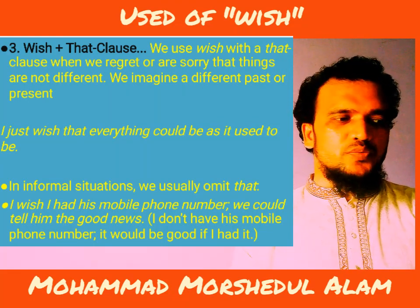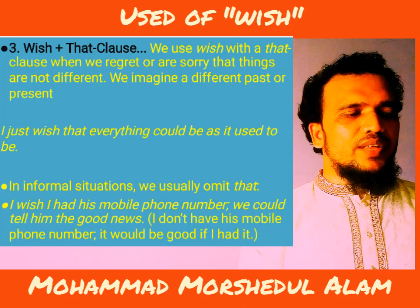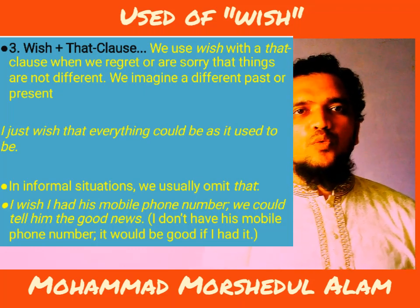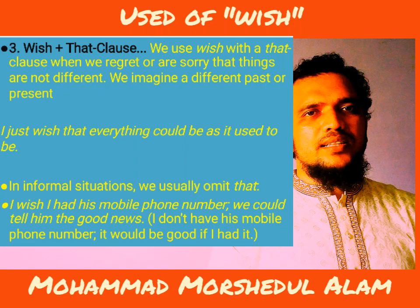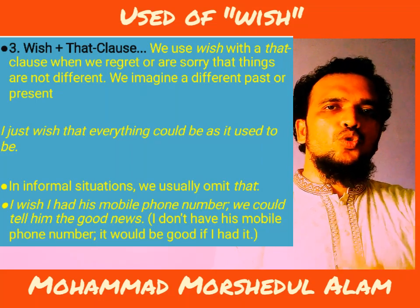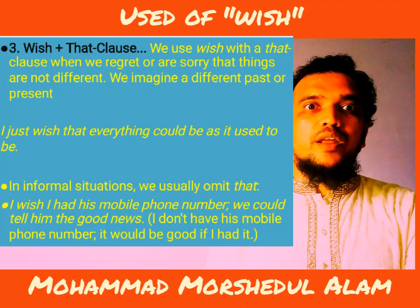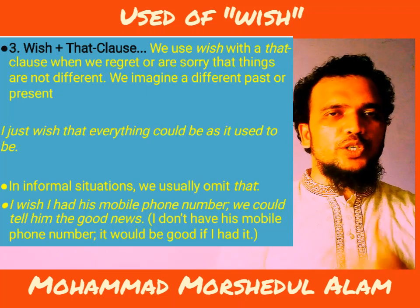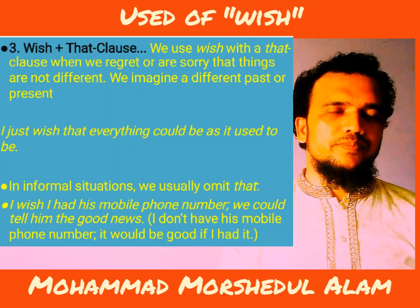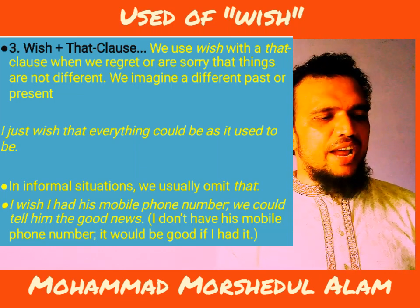The third use is wish plus 'that' plus past form. We use 'wish' with a 'that' clause when we regret or are sorry that things are not different — we imagine a different past or present. When you regret, you want the thing to be different, but reality is quite opposite to what you want. For example: 'I wish that I were a bird' — but I am not a bird. You can omit 'that': wish plus subject plus past form.